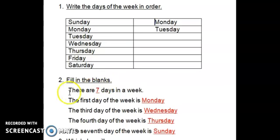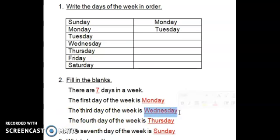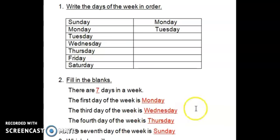Next, fill in the blanks. There are dash days in a week — there are seven days in a week. The first day of the week is Monday. The third day of the week — leaving that particular day and counting: Monday is first, Tuesday is second, Wednesday is third. So the third day of the week is Wednesday. The fourth day of the week is Thursday.